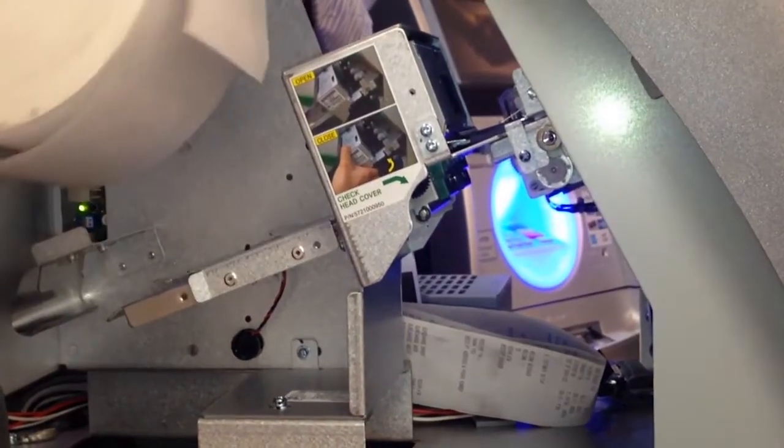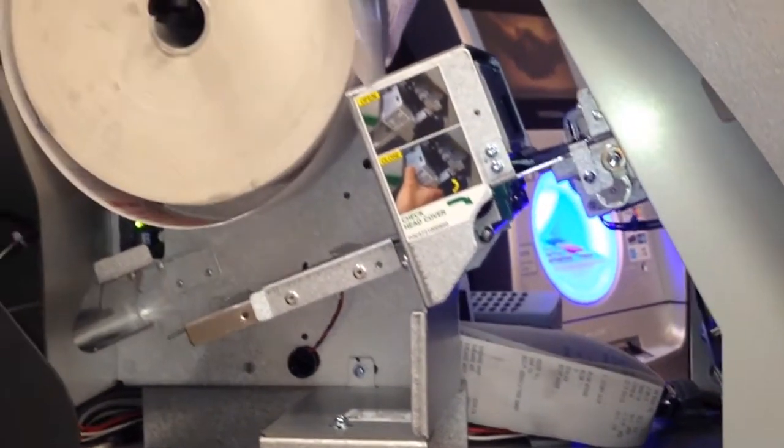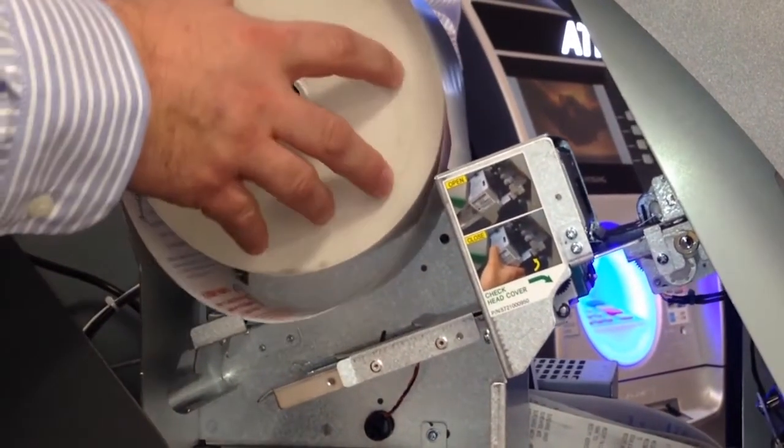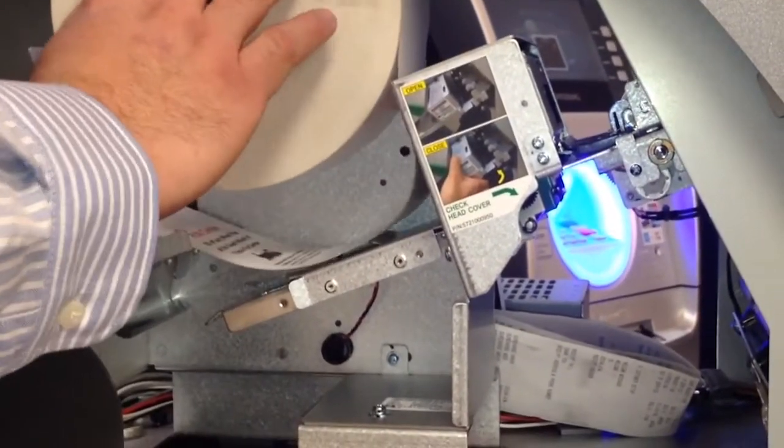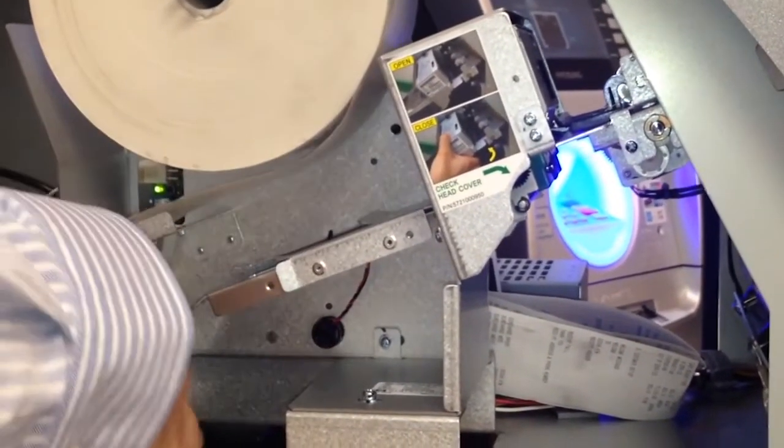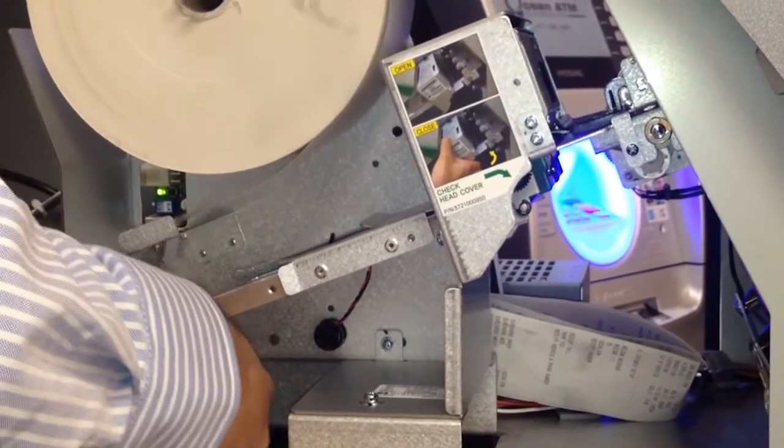Put the new paper on and you're going to feed it through the printer mechanism. There's a diagram on top of the printer that shows you how. Most of the time that diagram is accurate.